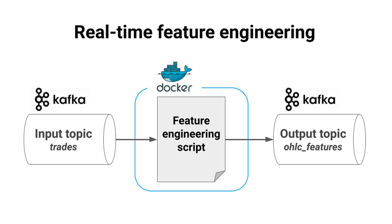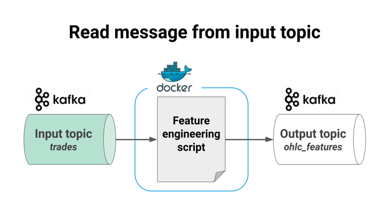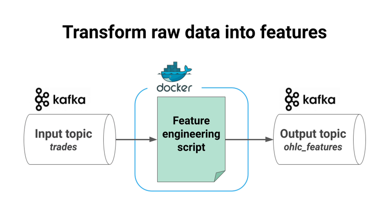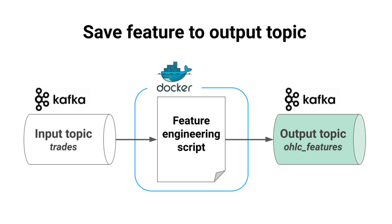You need to learn the tools that help you build real-time, production-ready machine learning systems. Let's go through a step-by-step example. I'll show you how to build a real-time feature engineering service that reads raw data from an input Kafka topic, transforms this data using stateful window aggregations, and then saves these transformed features into another Kafka topic so downstream services can use this data.